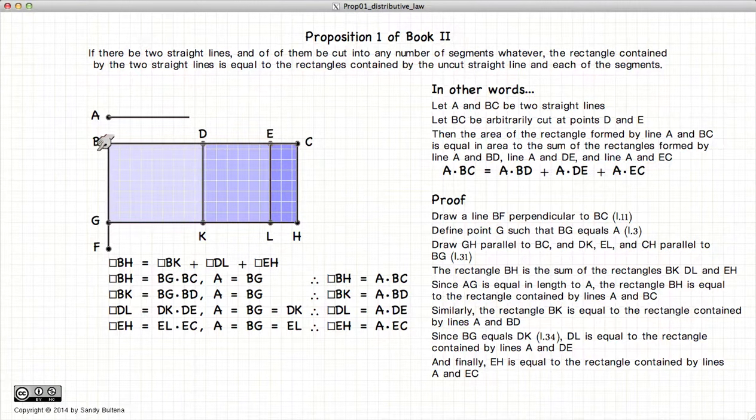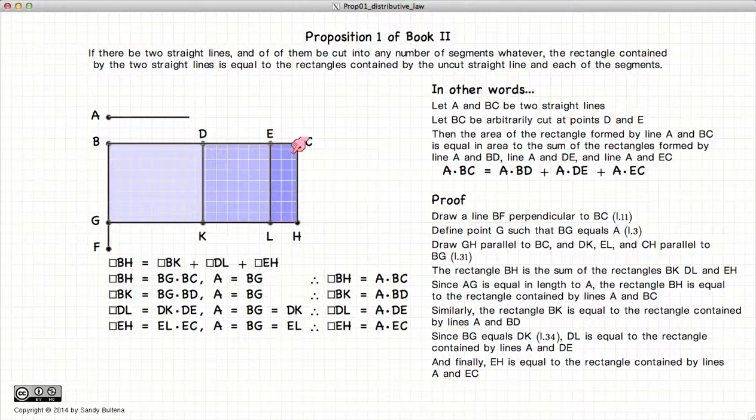Now having established that BG is equal in length to A, then the area of the rectangle BK is going to be equal to A times BD. The area of the rectangle DL will equal A times DE, and the area of the rectangle EH will equal A times EC.